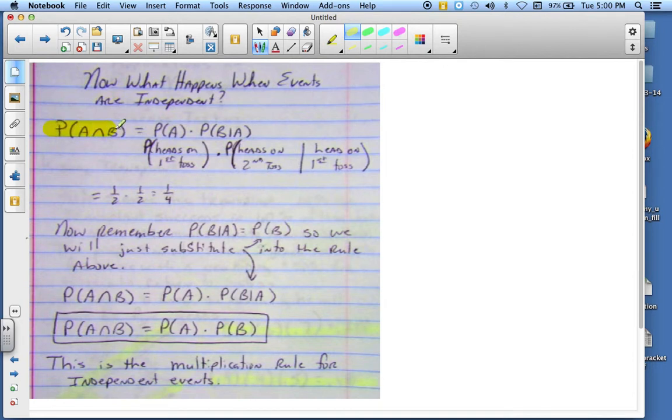When you have the probability of A and B, well, you need to find the probability of A. Now, we're talking about flipping a coin. So we're going to look at probability that the first toss is a head.